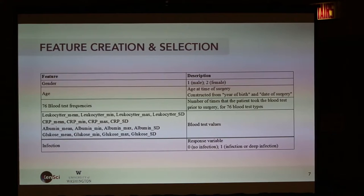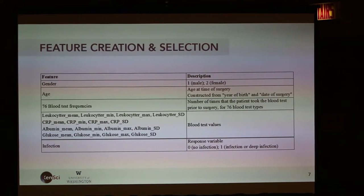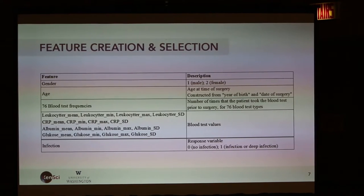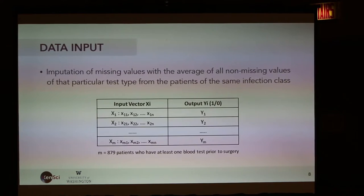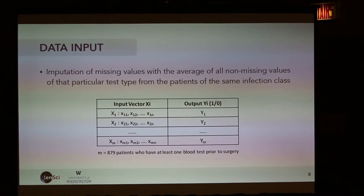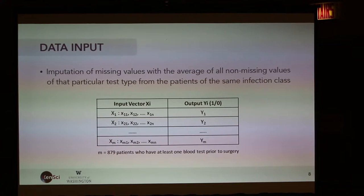The final feature set we worked with in our submission included gender and age, the frequencies of the 76 blood test types — how many times each test was taken per patient — and then the values for these four key tests: the min, max, standard deviation, and mean. The outcome variable to predict was binary (1 or 0). For imputation, we tried a couple of techniques and ended up using the mean value within the same outcome variable to replace missing data in the lab test results.